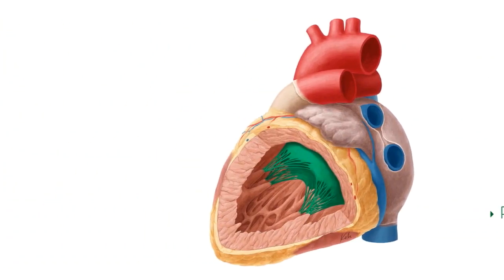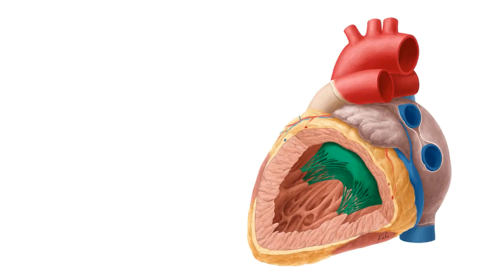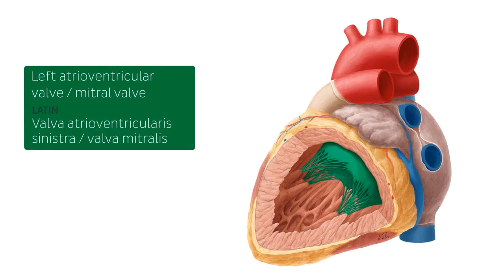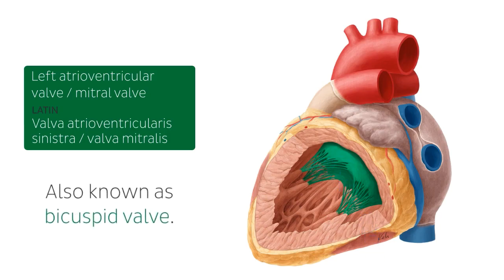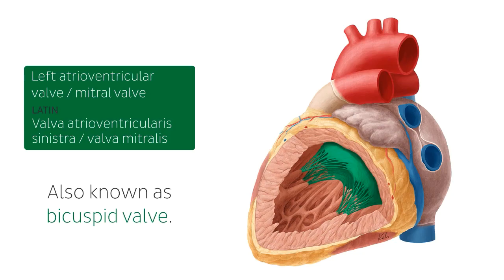Now let's explore these structures in a little more detail. We're now looking at the mitral valve, or the left atrioventricular valve, highlighted in green. We've made a cut on the left ventricle of the heart to expose the left atrioventricular valve. You can also call this the bicuspid valve because, as the name indicates, 'bi' meaning dual and 'cuspid' meaning flap — so it's a dual-flap valve that lies between the left atrium and the left ventricle.